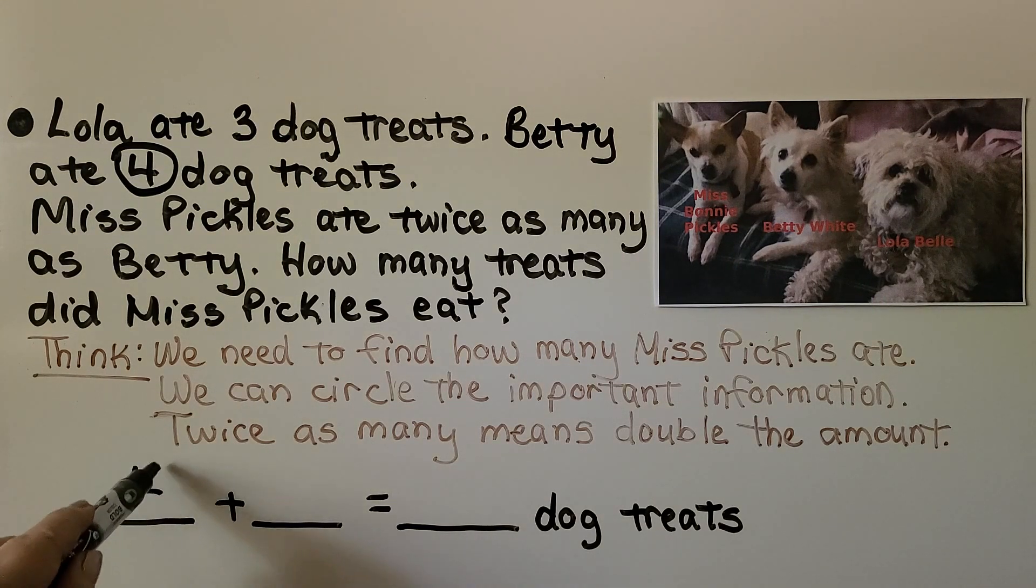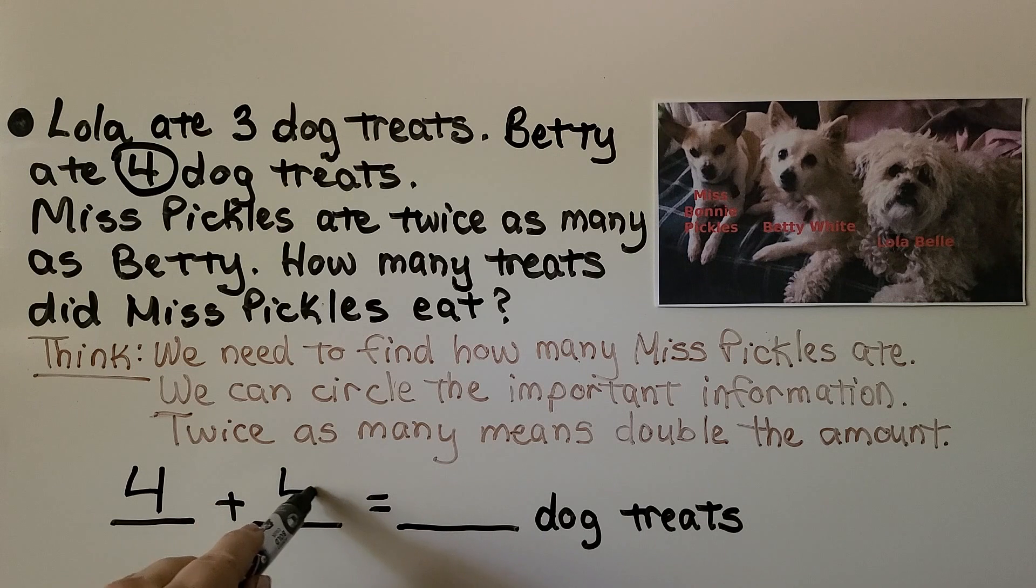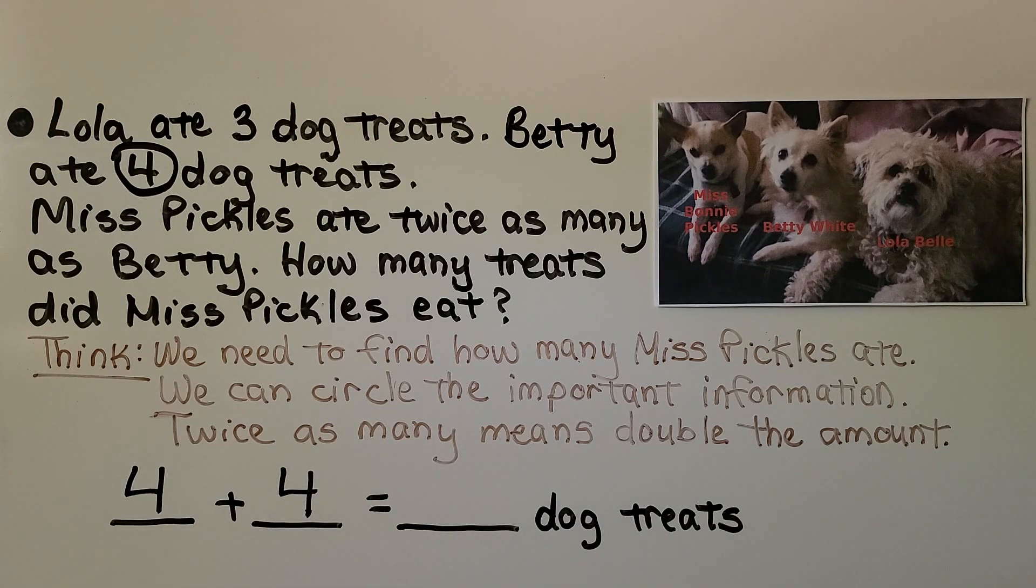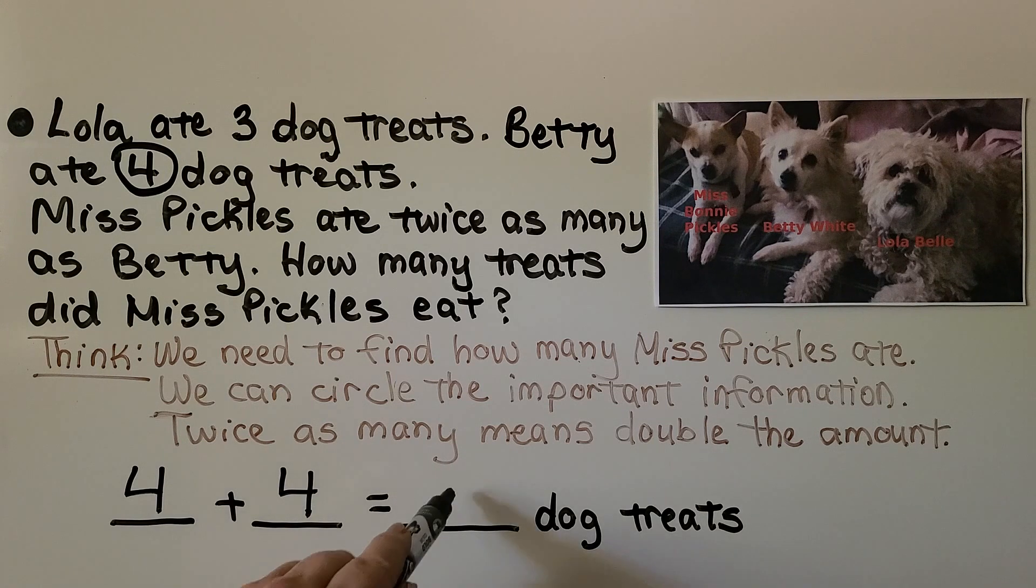We can write the 4 that Betty ate and we can double it, 4 plus 4. Do you know how much 4 plus 4 is? If you said 8, you're right.